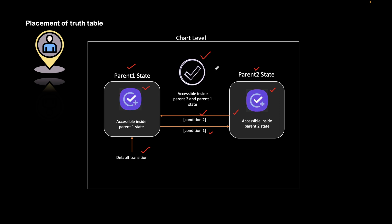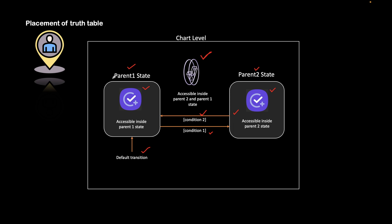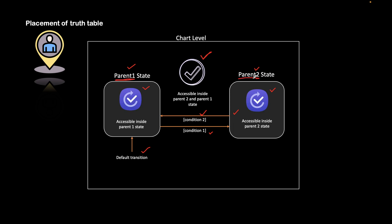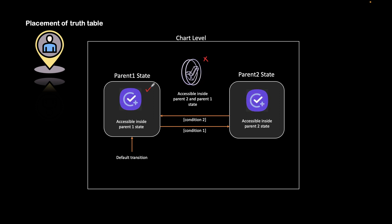In this scenario, suppose the truth table is placed at the chart level. Then both parent state one and parent state two can access the truth table, since it is available at that top level.